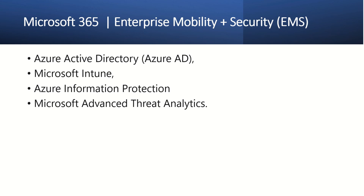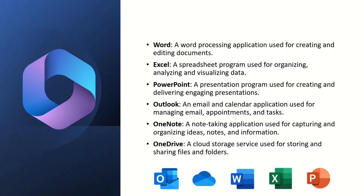Whether it's a small organization or an advanced organization, Microsoft has a version of M365. There is a specific tier to find security and flexibility for each organization. Now we have 18 products and 18 services. Let's see the details of these services.